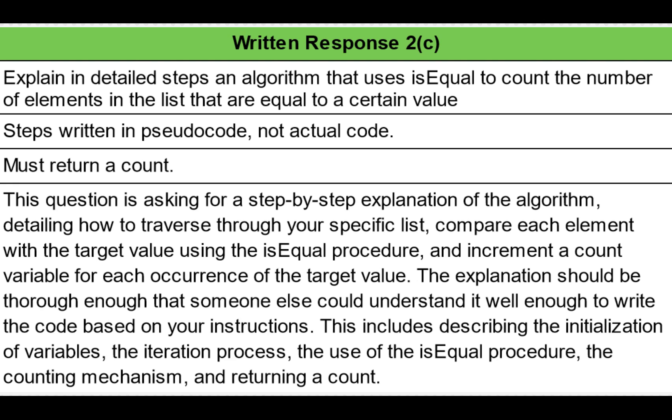Finally, written response 2C. This question is asking for a step-by-step explanation of an algorithm, specifically detailing how to traverse through your specific list, compare each element with the target value using the isEqual procedure, and increment a count variable for each occurrence of the target value. Well, this explanation should be thorough enough that someone else could understand it enough to write the code based on your instructions. This includes describing initializing of variables, the iterative process, the use of the isEqual procedure, the counting mechanism, and returning the count.